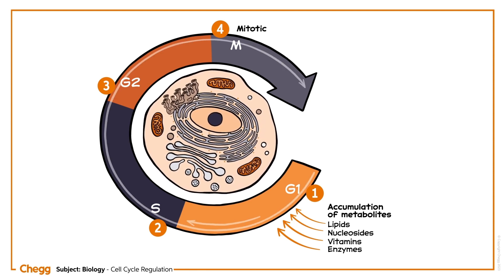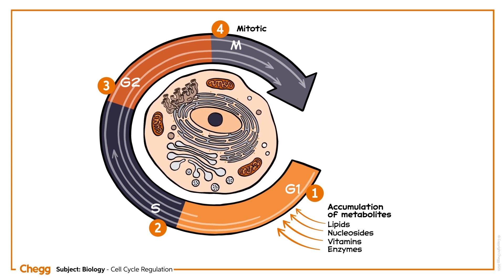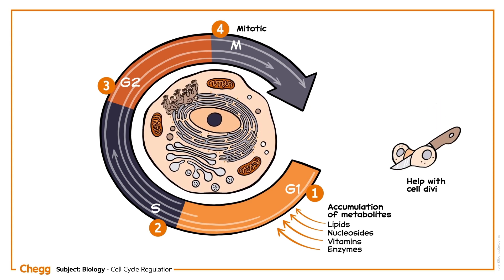At the start of each cell phase, cell cyclins get released and help in programming various cellular events and help in cell division as well.